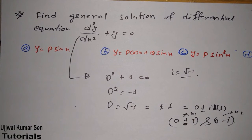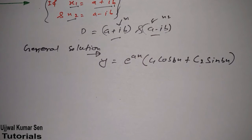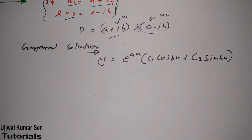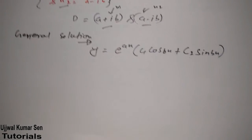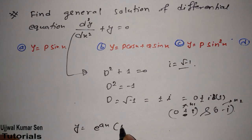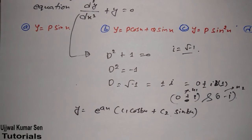Now what we have to do is write the general solution for this case. I have already shared what the general solution is. First we write the general solution equation, then we put the values we found from the problem. So: y is equal to e to the power ax, times c1 cos bx plus c2 sin bx. Once we have written this equation, our job is almost done.